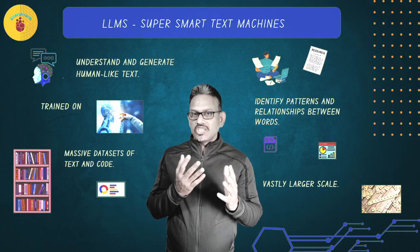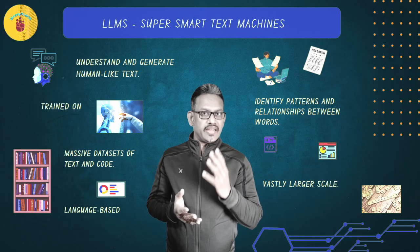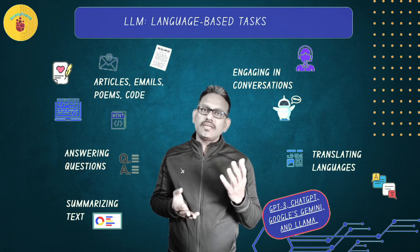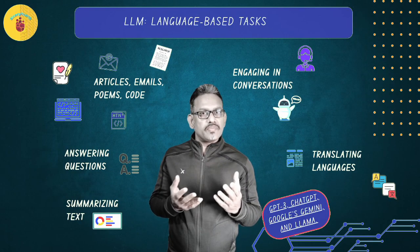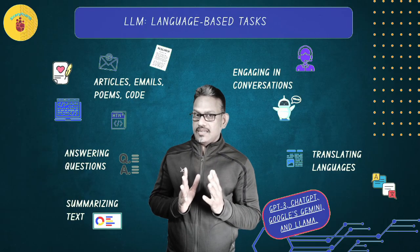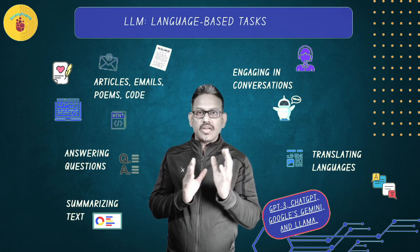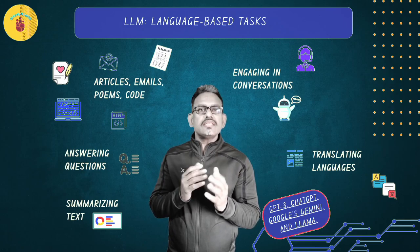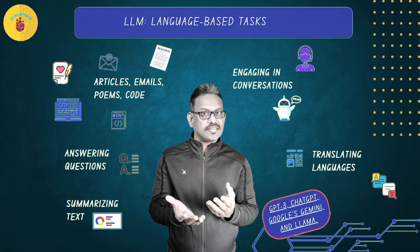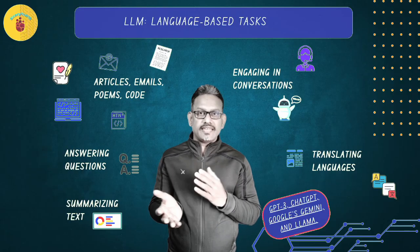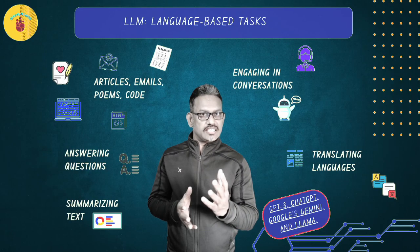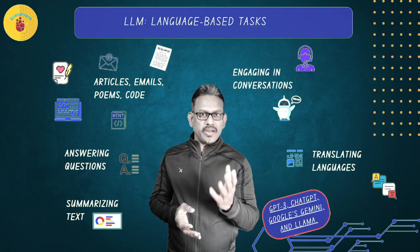LLMs perform tasks like generating text — writing articles, emails, poems, quotes, and many more things. Answering questions and providing information based on their vast knowledge. Summarizing text — condensing long documents into short versions. Engaging in conversation, powering chatbots and virtual assistants. Translating languages, converting text from one language to another. Think of models like GPT-3, ChatGPT, Google's Gemini, and Llama by Meta — these are all examples of LLMs that have captivated the public imagination with their impressive capabilities.